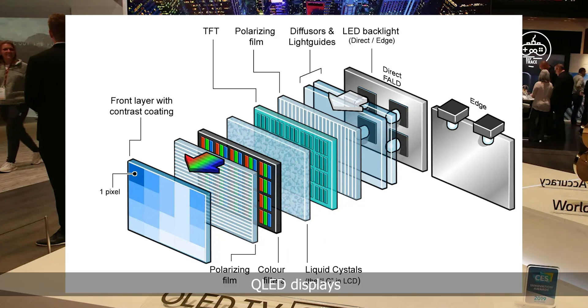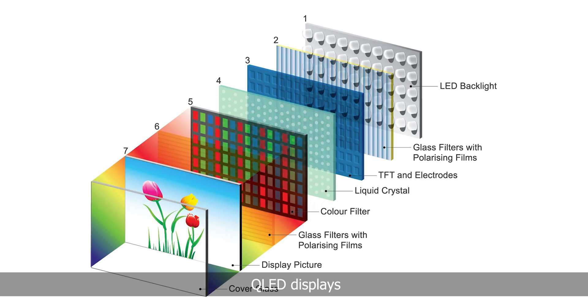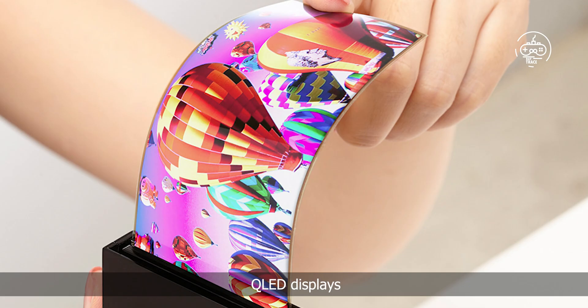QLED is the least impressive and least expensive display type covered here, but it's also the most recent, having been invented by Sony in 2013. Despite the name looking like OLED, they aren't OLEDs at all — they're basically just LCD screens that use quantum dots, microscopic molecules that emit a different color when light reaches them from a backlight. QLEDs are cheaper to produce, and thus are often used to make cheaper TVs. However, their picture quality isn't as consistent as OLED, AMOLED, or Mini-LED.